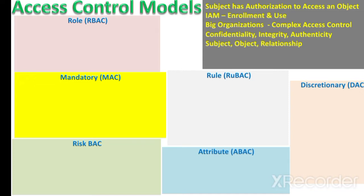Access control models decide the relationships between subjects and objects and grant a subject access to an object based upon that relationship. We use a mixture of access control models — for example, for firewalls we use rule-based access control, for HR we use role-based access control, and for file access we use the discretionary access control model on a file server or file sharing server.